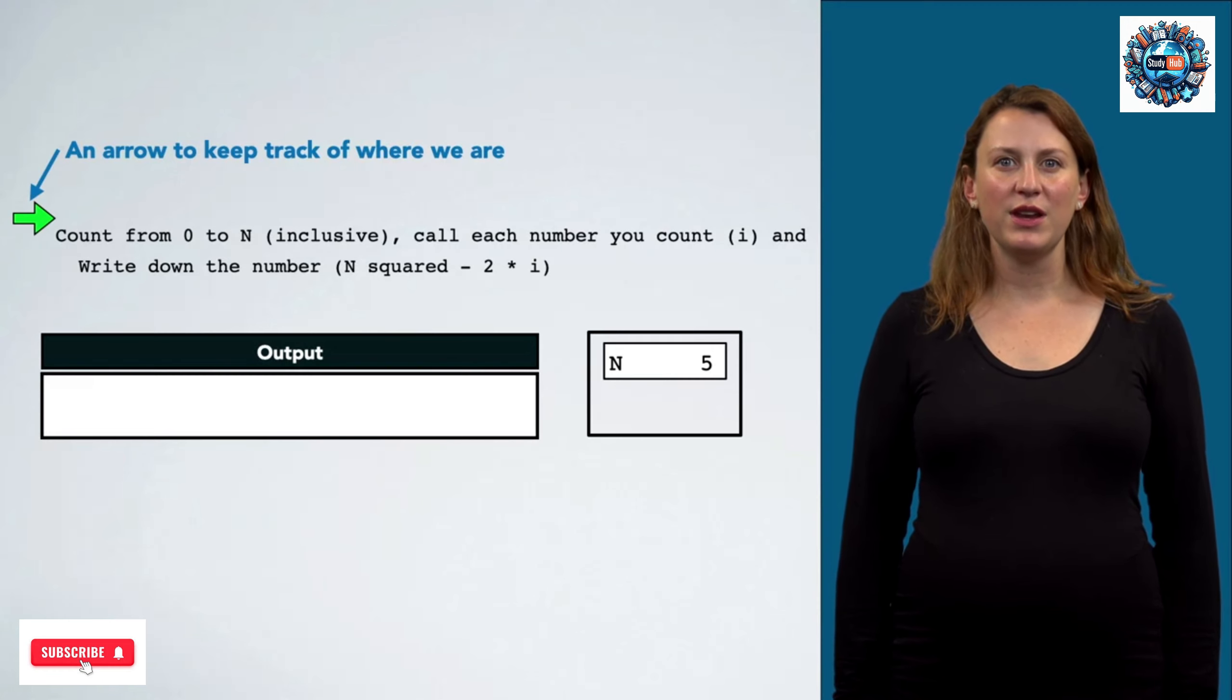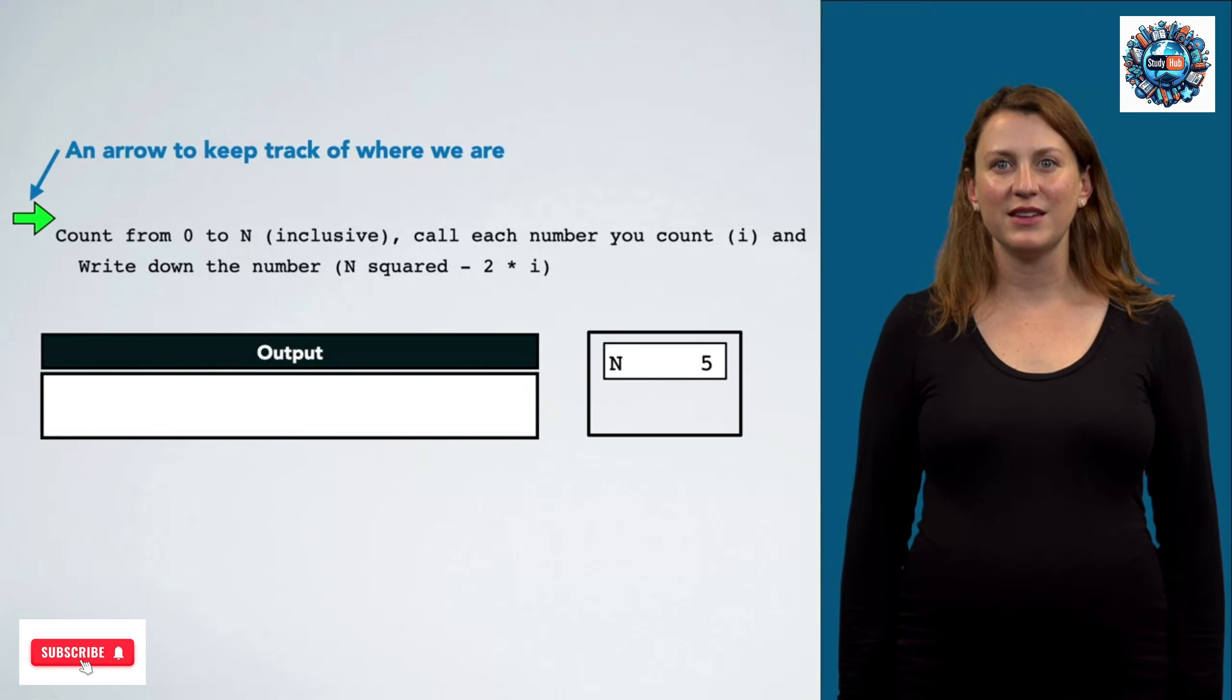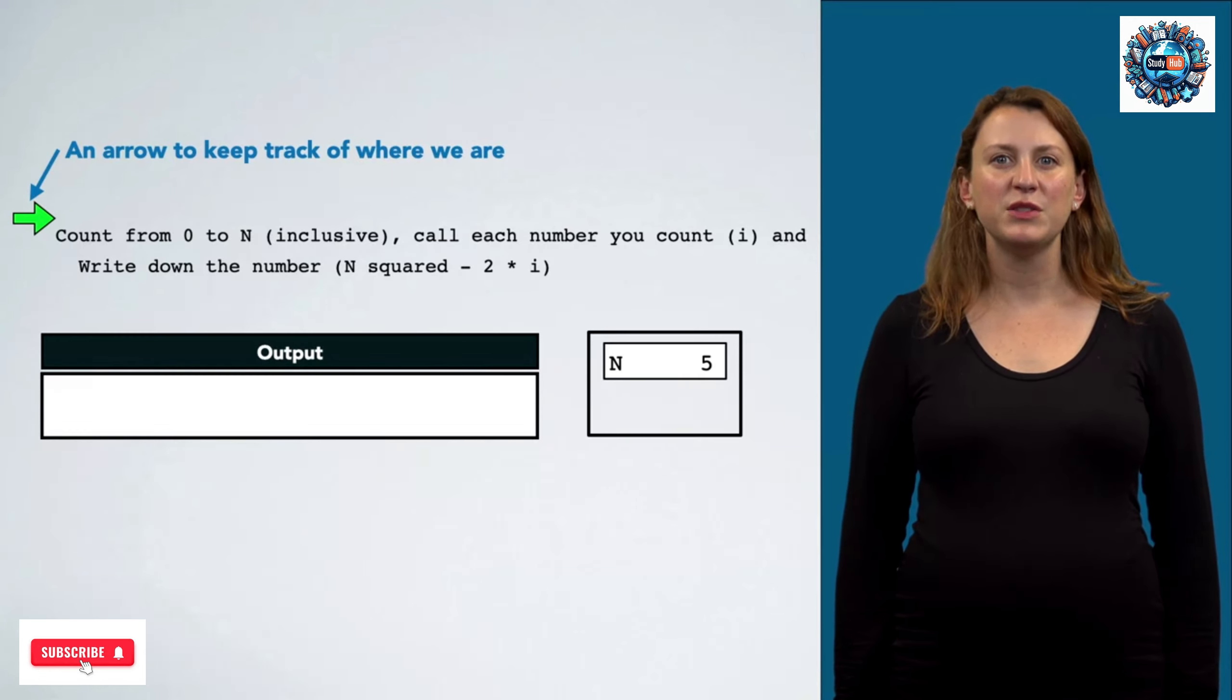Finally, we're going to use a green arrow to keep track of where we are. Right now, the arrow is right before the line that says count from 0 to n, which means we haven't yet done this.